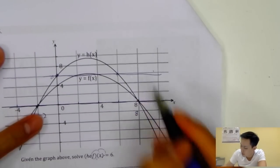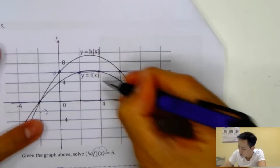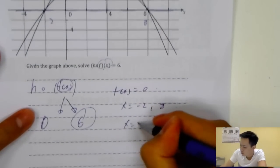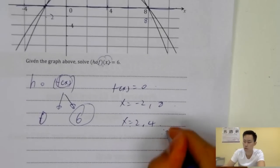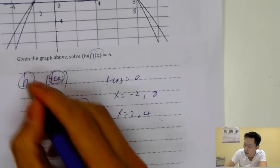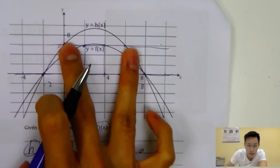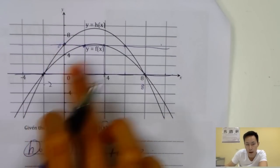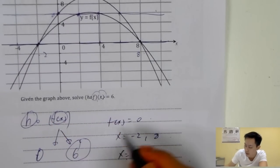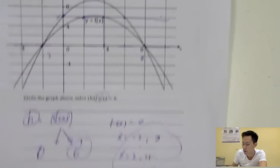What you do next is make f(x) equal to zero, then you can find the x-value — which is minus two and eight. Then make f(x) equal to six: draw a line and look at the f(x) graph, which gives two and four. So x is equal to minus two, eight, two, or four — four answers total.